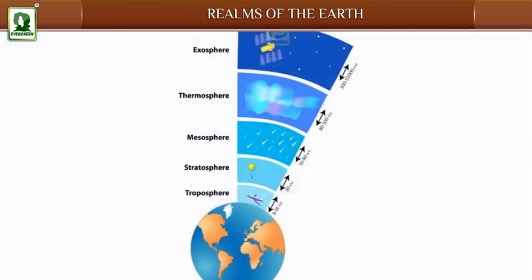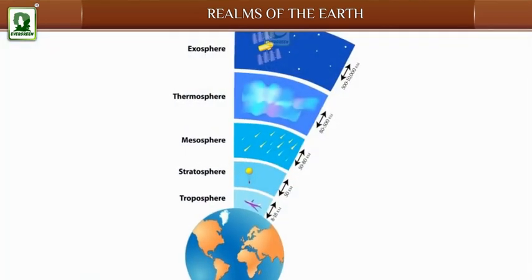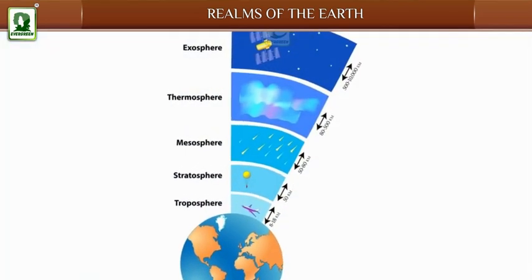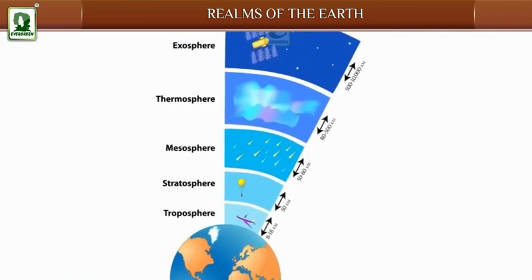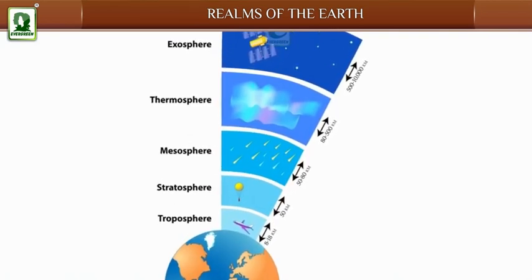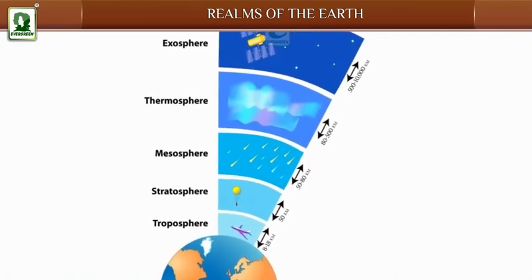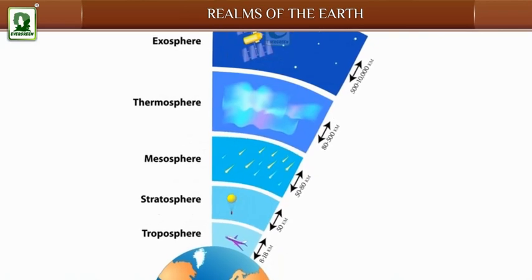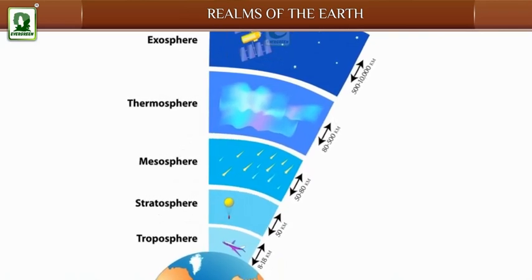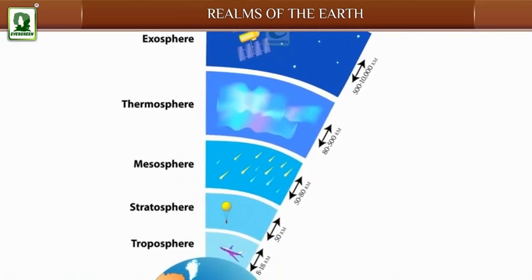The earth's atmosphere is divided into five layers on the basis of changes in temperature with height.